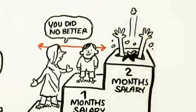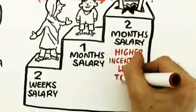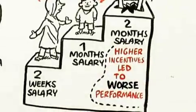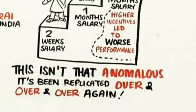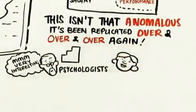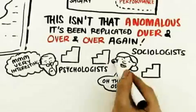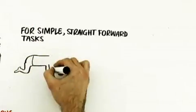Well, what happened was that the people offered the medium reward did no better than the people offered the small reward. But this time around, the people offered the top reward did worst of all. Higher incentives led to worse performance. What's interesting about this is that it actually isn't all that anomalous.